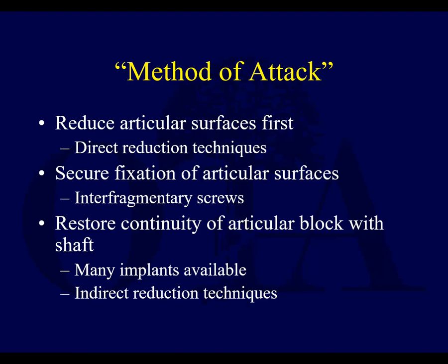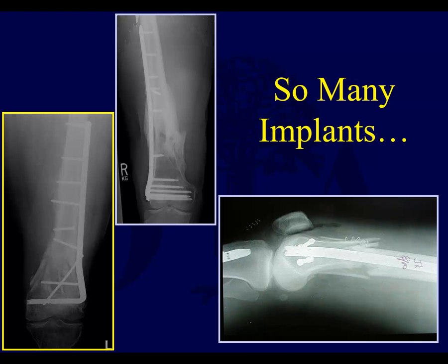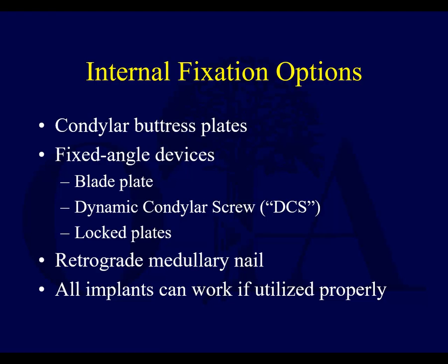For pre-op planning, the proposed method of attack emphasizes the importance of articular reduction: reduce the articular surface first using direct reduction techniques, secure fixation of the articular surfaces with interfragmentary screws, then restore continuity of the articular block to the shaft. You have all types of implants at your disposal — a blade plate, a locked plate, and a nail. Locked plates and nails are currently the two most commonly used devices. We'll get into fixation options, retrograde nails, and plates in the next portion of this talk.